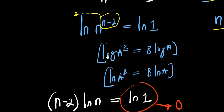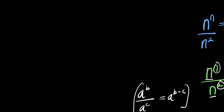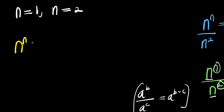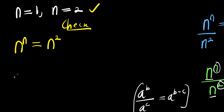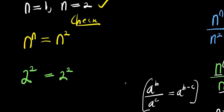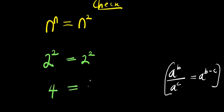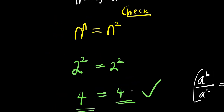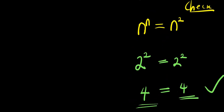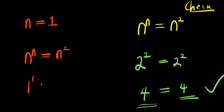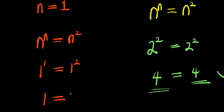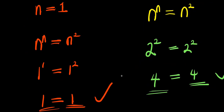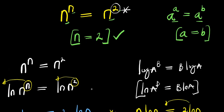So all these different methods give us the same solution: n equals 1 and n equals 2. Let's verify — when n equals 2: 2 power 2 equals 2 power 2, that's 4 equals 4. Correct. When n equals 1: 1 power 1 equals 1 power 2, that's 1 equals 1. Both sides are the same. This is how you can easily solve this exponential problem using any of the methods.